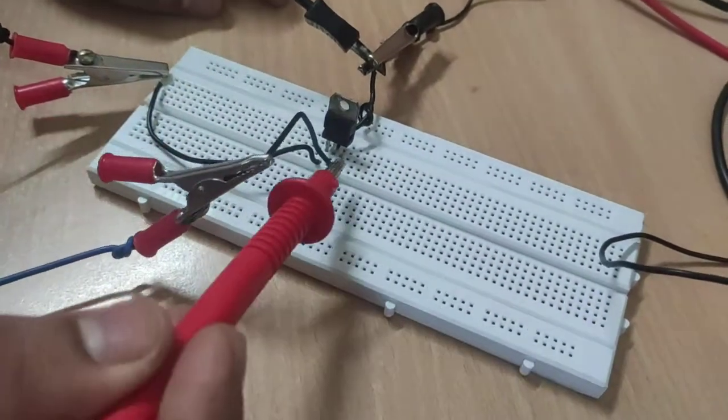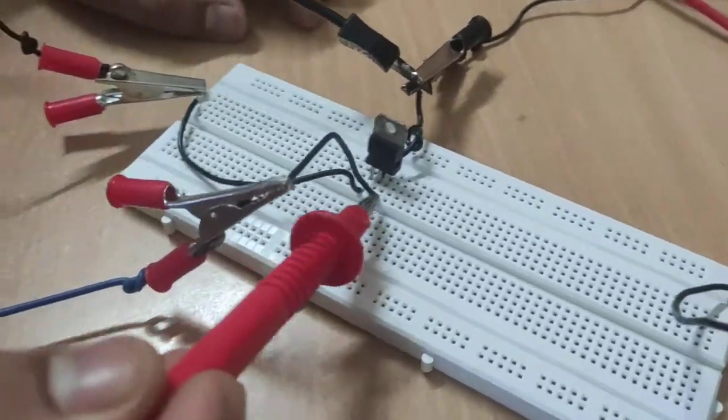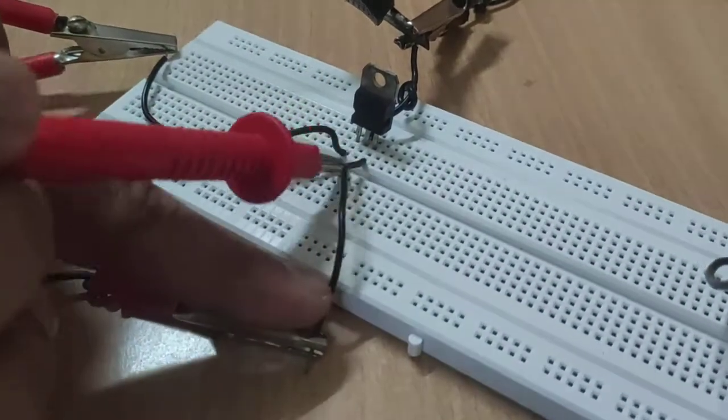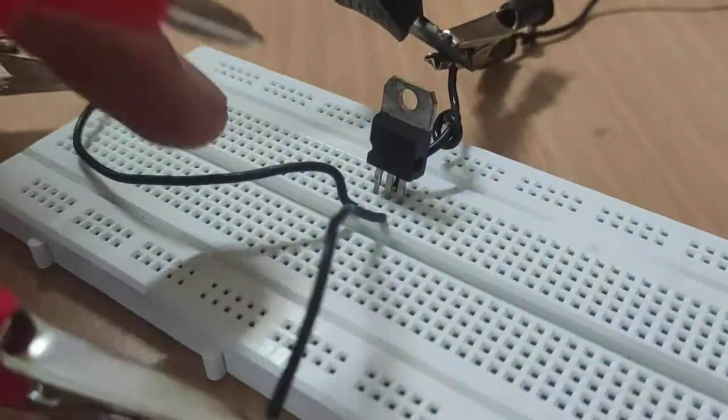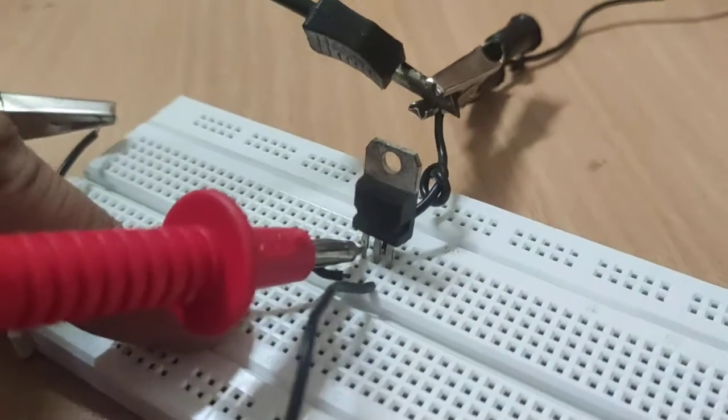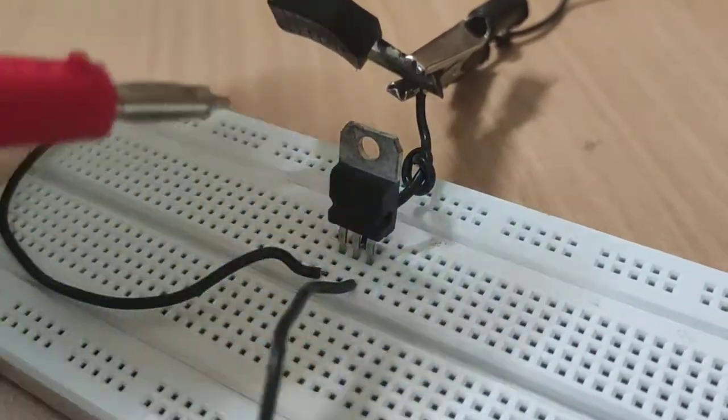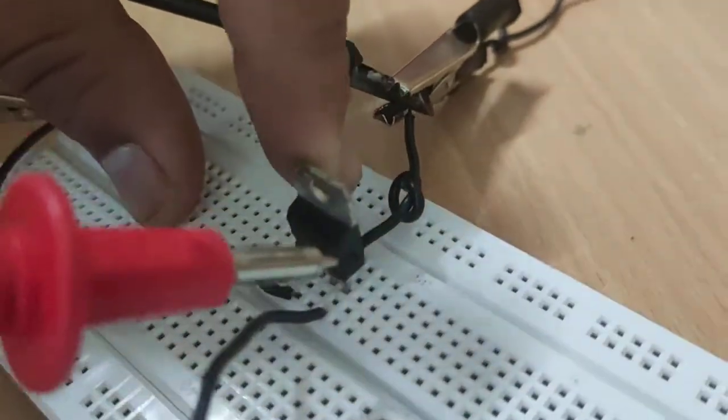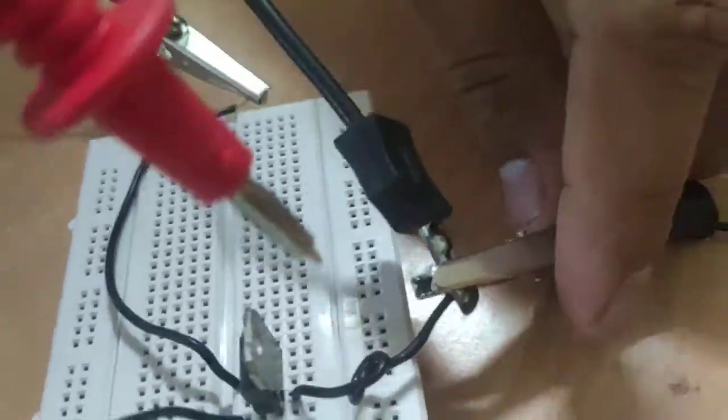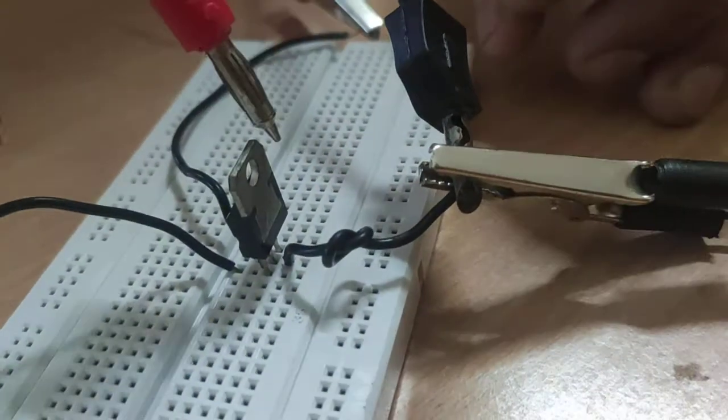So this pin and the wire connected in the parallel vertical path, both are connected. Similarly, this pin and this pin number 1 are connected to each other as those are connected in same column. Also the ground pin number 2 is connected to the same wire.